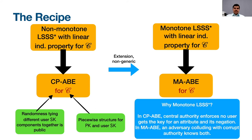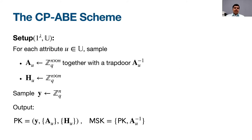The reason we must use monotone LSSS rather than non-monotone LSSS is that in standard CP-ABE, a central authority enforces that a user gets a key for either an attribute or its negation, but not both. However, in MA-ABE, an adversary colluding with a corrupt authority can obtain both, which breaks the security of the non-monotone LSSS and therefore breaks the security of MA-ABE.